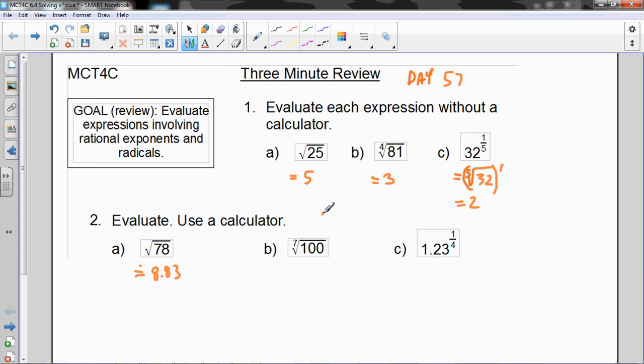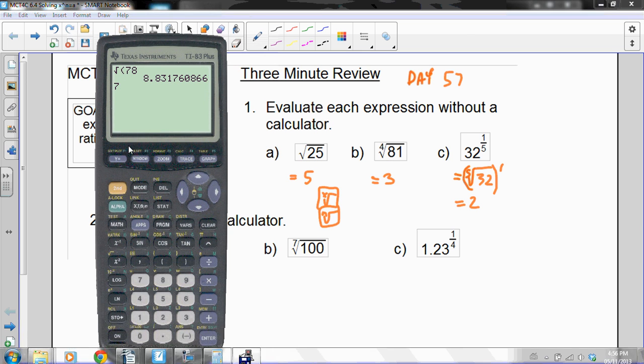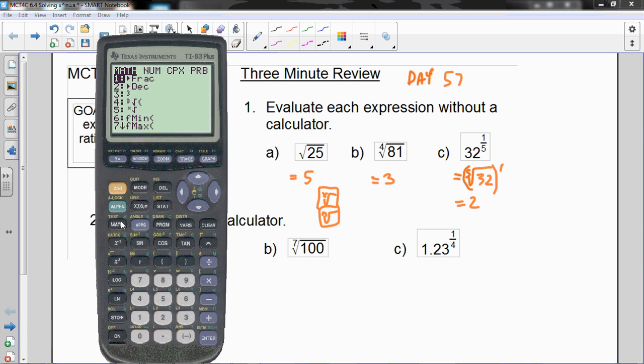On your calculator, it'll look either like that, or perhaps, like in this case, it looks like this. And on the graphing calculator, it's actually in a menu. It's in the math menu, and then I go down the xth root of 100, not 110. And then I press enter, and I get 1.93.